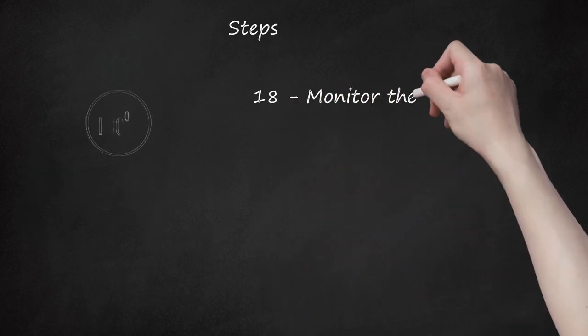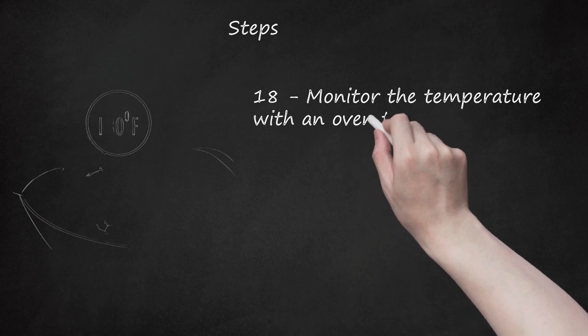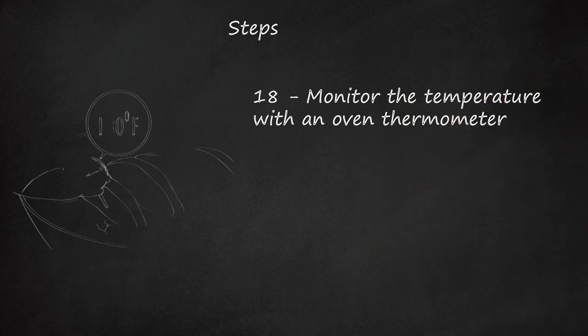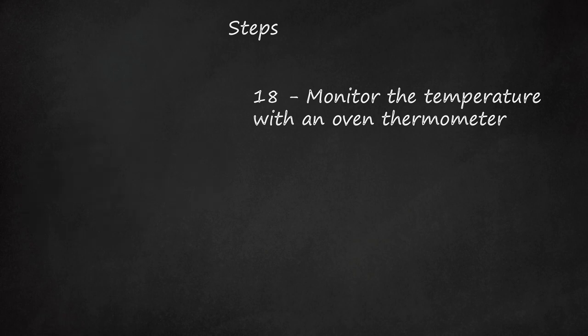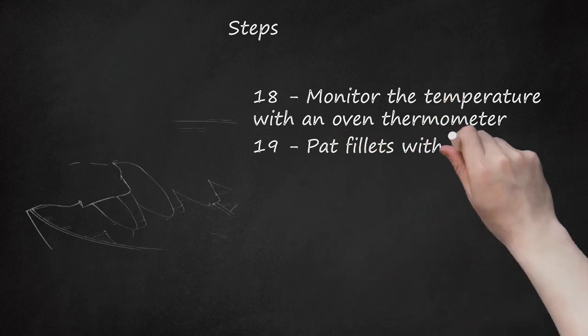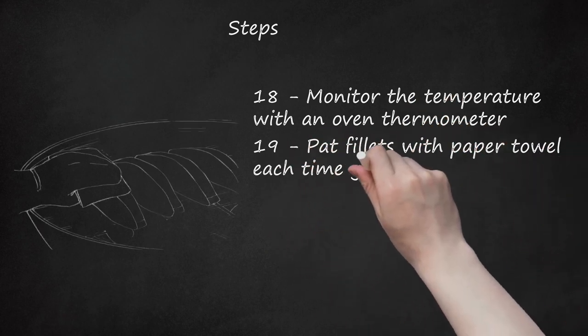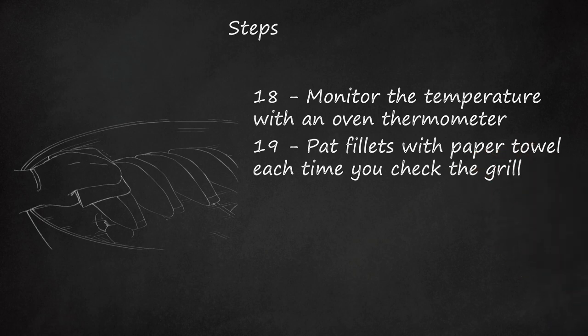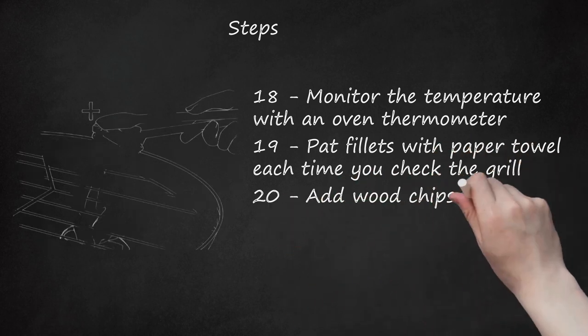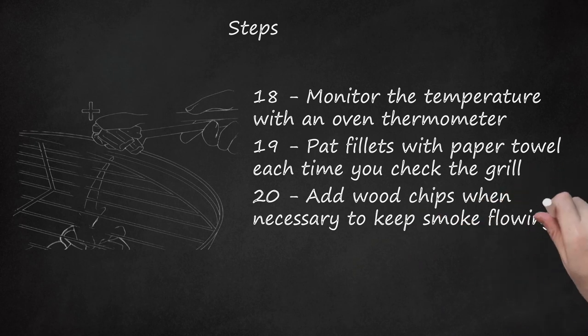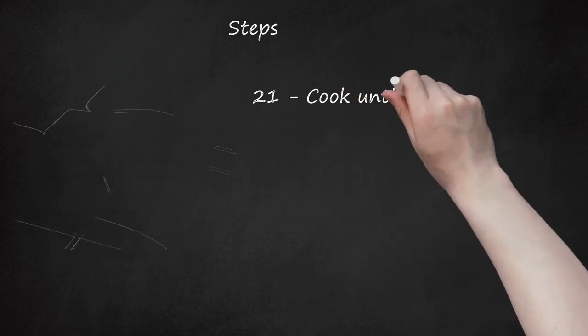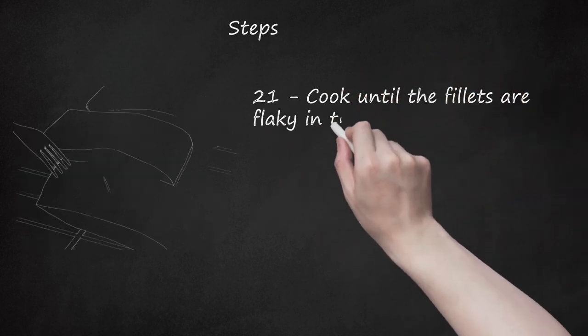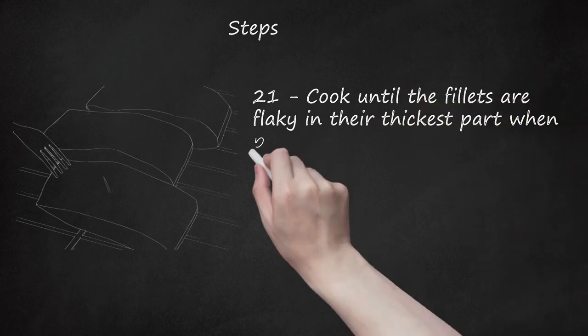Step 18: Monitor the temperature with an oven thermometer. Keep the heat at about 180 degrees Fahrenheit (82°C) and add or remove coals as necessary. Step 19: Pat fillets with paper towel each time you check the grill. Step 20: Add wood chips when necessary to keep smoke flowing. Step 21: Cook until the fillets are flaky in their thickest part when poked with a fork.